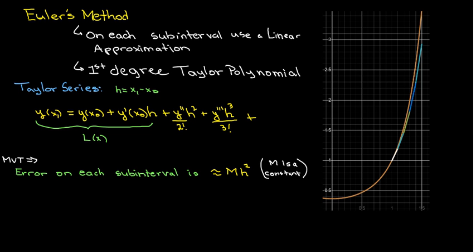So the error on each sub-interval, this is from the mean value theorem, really what you're looking at is the next term in the Taylor series. And then the mean value theorem will say that it's going to be some number between x sub 0 and x sub 1, the second derivative of that. And so bottom line is, on each sub-interval you're getting an error which is bounded by a constant times h squared.